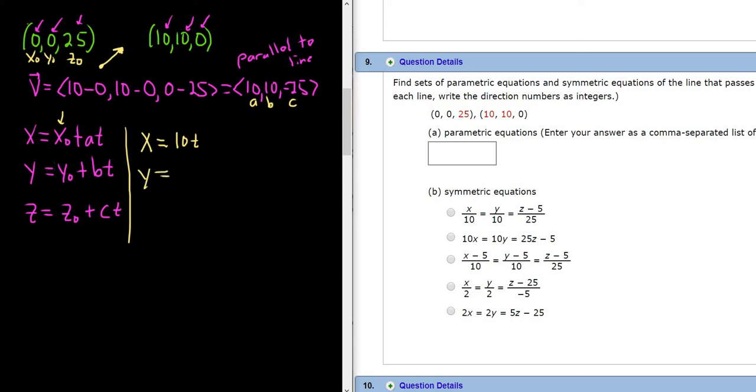y is equal to, again, y naught is 0. And then b is 10. So 10t. And then z is equal to z naught. Well, z naught is 25. And then c is negative 25. So negative 25t.